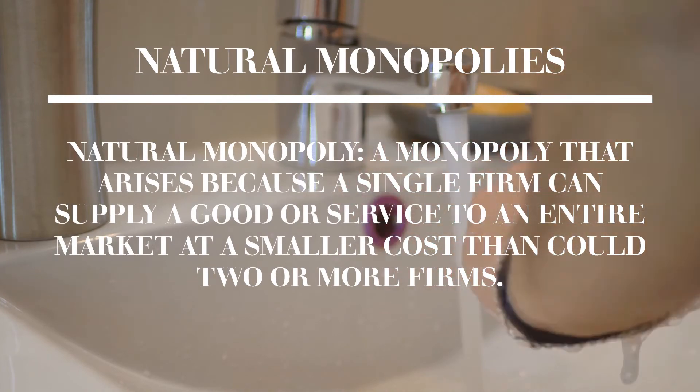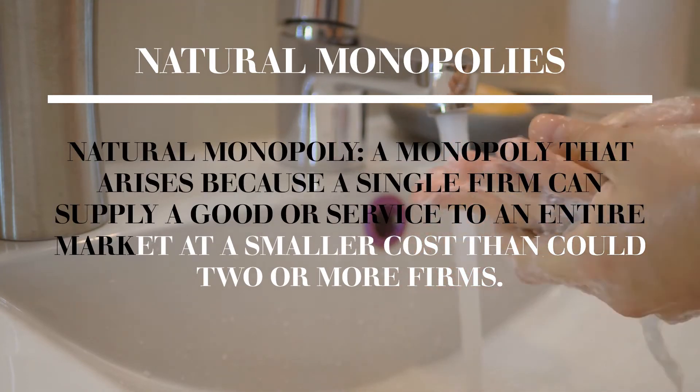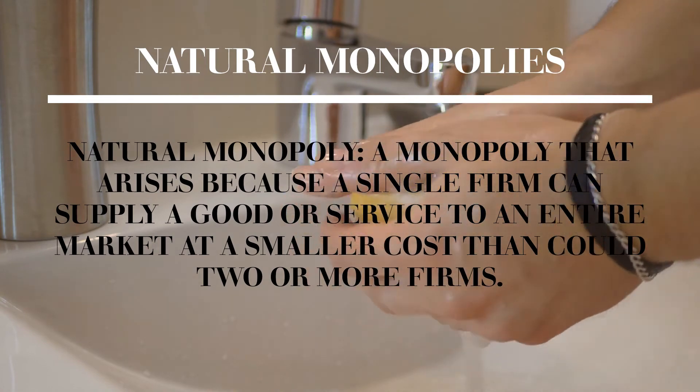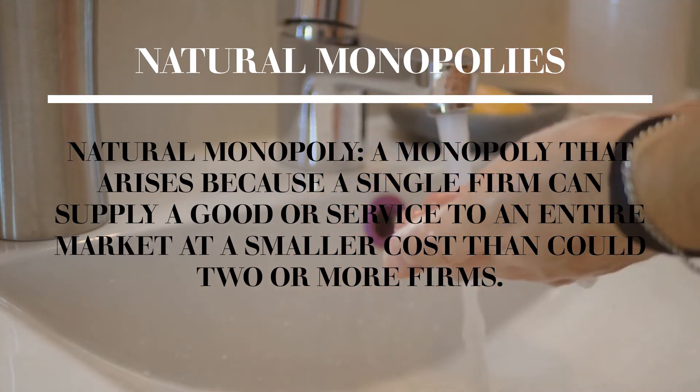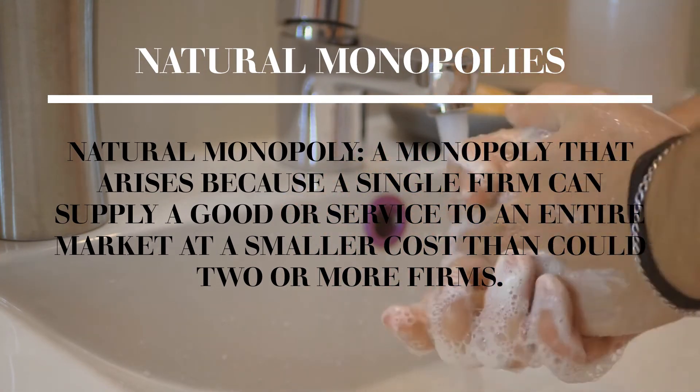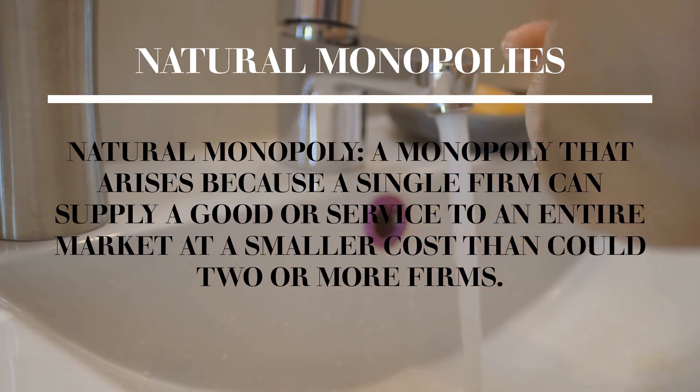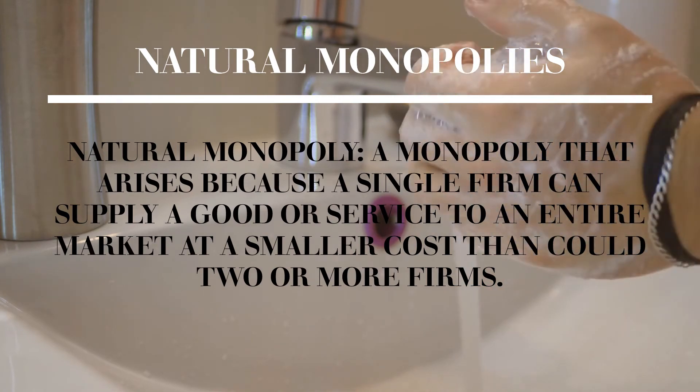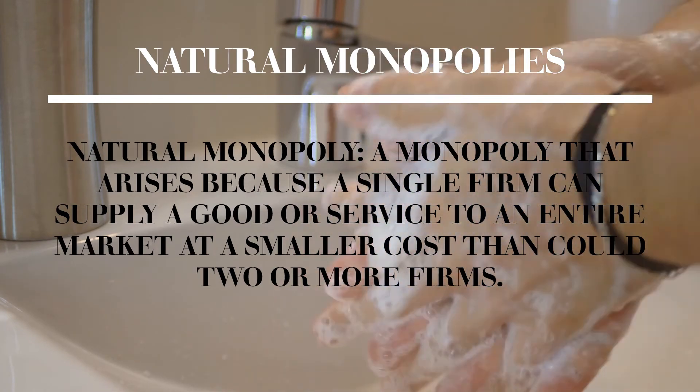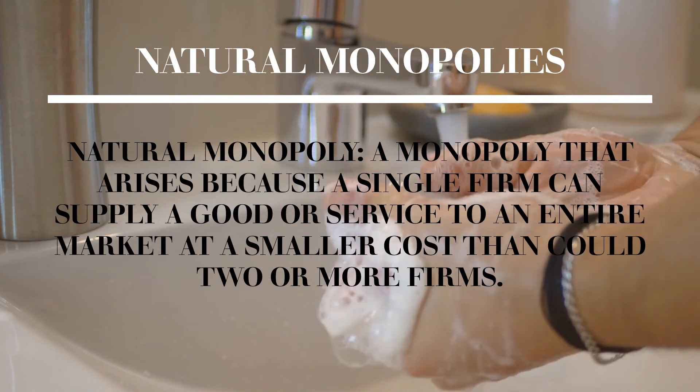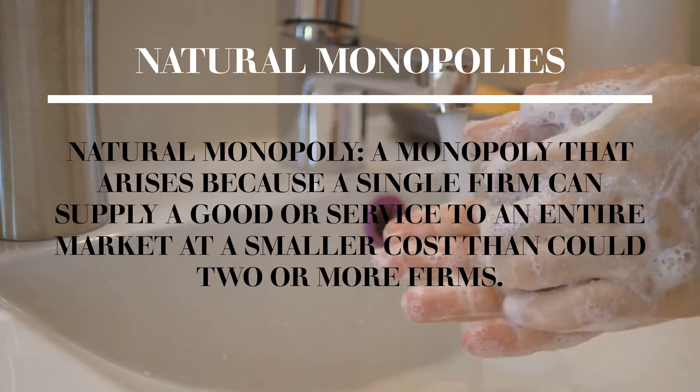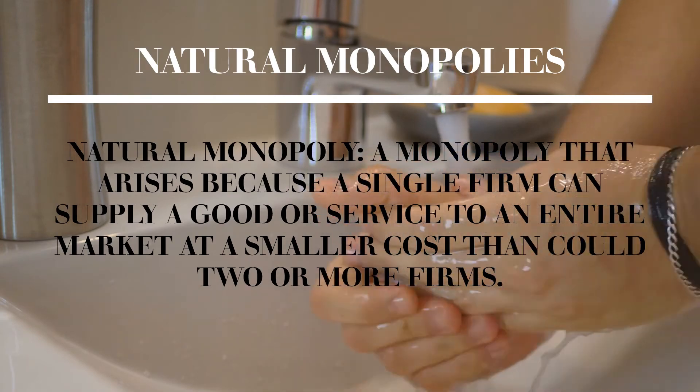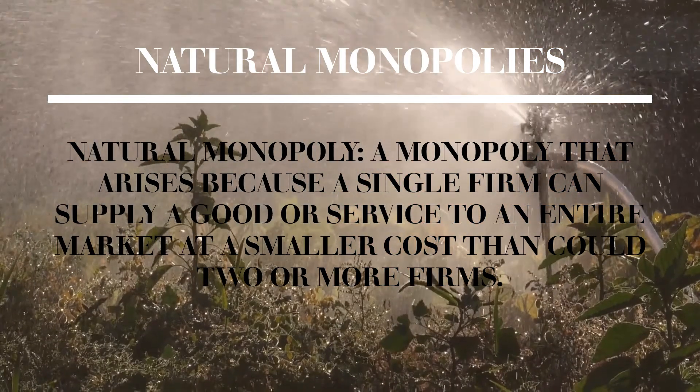So here is an important term to remember regarding the third point and it is a natural monopoly. Natural monopoly is a monopoly that arises because a single firm can supply a good or service to an entire market at a smaller cost than could two or more firms. Because two or more firms incur higher costs, this prohibits additional competitors from entering the market and the company remains monopoly. And a perfect example of natural monopoly is water supply.